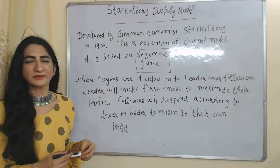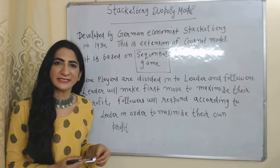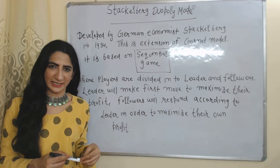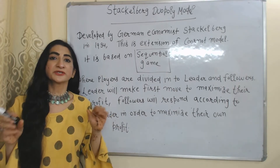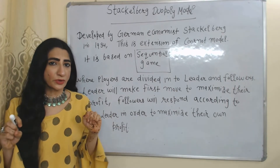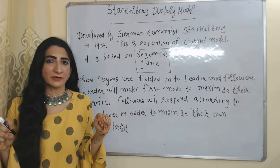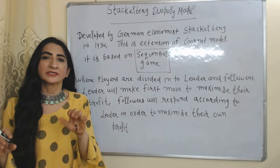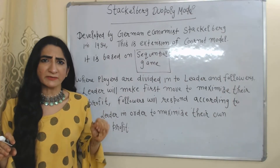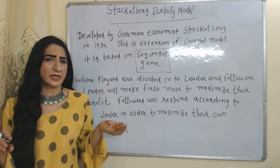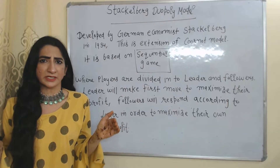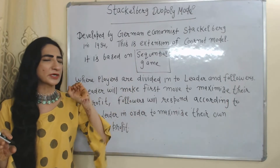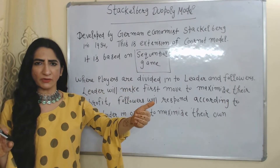Hello everyone, my name is Minni Sati. Today we are going to talk about the Stackelberg model of oligopoly. This model was given by German economist Stackelberg in 1934 and is an extension of the Cournot model.